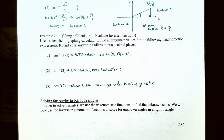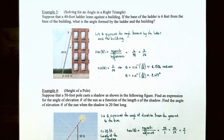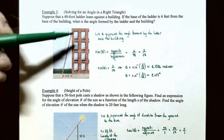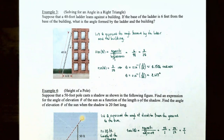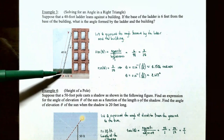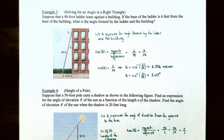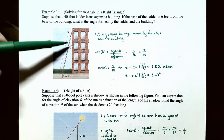Now that we've talked about inverse sine, inverse cosine, and inverse tangent, let's talk about how to solve for angles in right triangles. In order to solve a triangle, we use trigonometric functions to find unknown sides, and now we'll use inverse trigonometric functions to find unknown angles. Example 3: a 40-foot ladder leans against a building. If the base of the ladder is 6 feet from the base of the building, what is the angle formed by the ladder and the building?